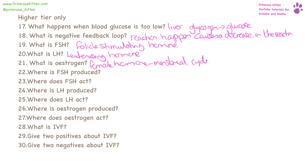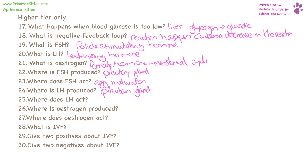FSH is produced in the pituitary gland. It acts on the ovaries and causes an egg to mature. Luteinizing hormone is also produced in the pituitary gland, and it acts on the ovaries causing an egg to be released.